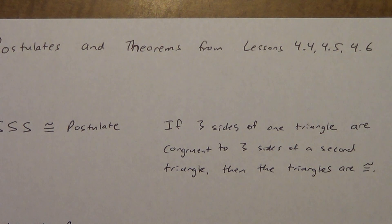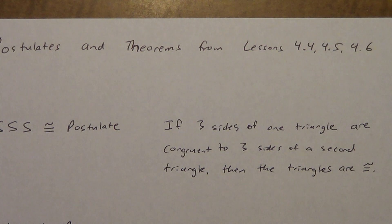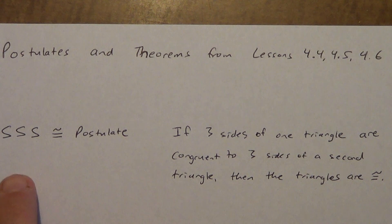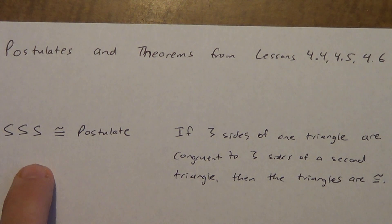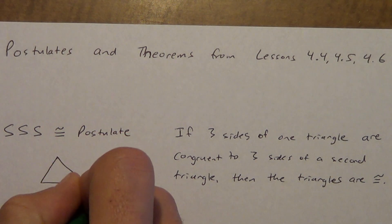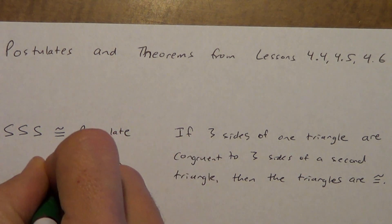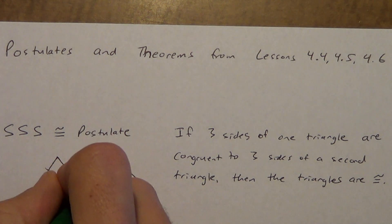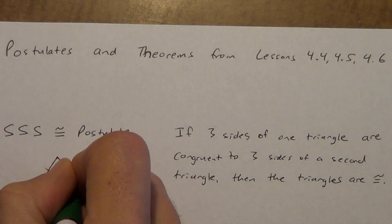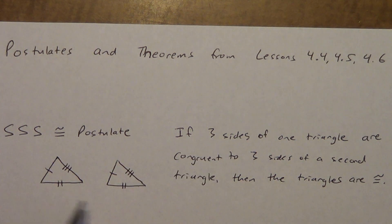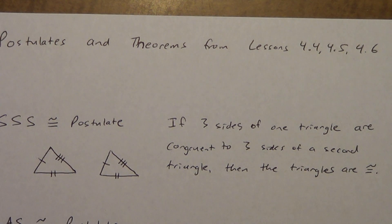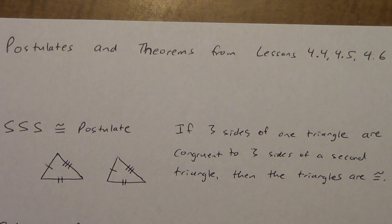If you think back to lesson 4.2 on congruent figures, we said all corresponding sides and all corresponding angles had to be congruent. I told you we'd learn some shortcuts — these are those shortcuts. With SSS, you don't know anything about the angles; all you need is three sets of congruent sides. If you have that, the triangles are congruent by the side-side-side congruence postulate.